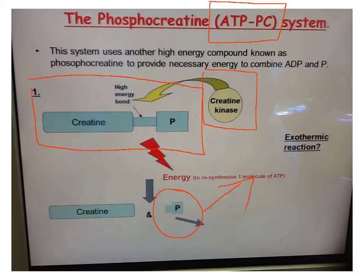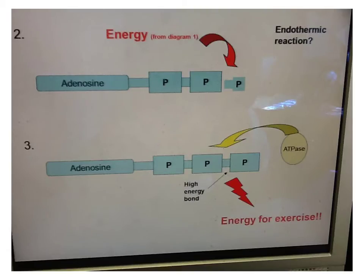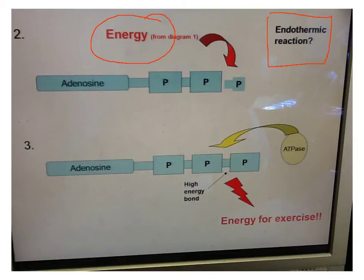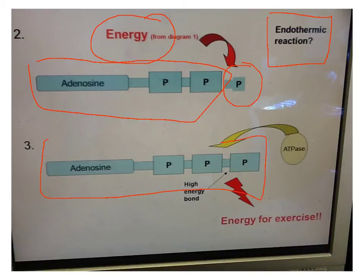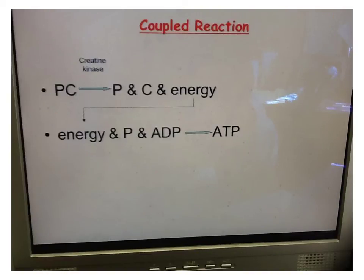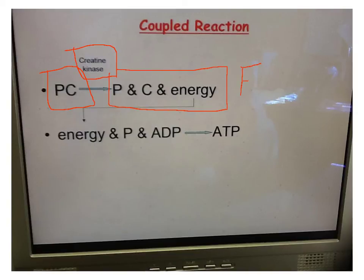When we have a reaction that gives off energy, that's called an exothermic reaction. The second part of the coupled reaction in the ATP-PC energy system involves the endothermic reaction. All that is, is using the energy from the breaking off of the phosphate compound from phosphocreatine to join that phosphate back to ADP to make ATP. There's our phosphocreatine, there's creatine kinase — our enzyme — and there's the first part of the coupled reaction in the ATP-PC energy system. Remember, that's an exothermic reaction because it's giving off energy.